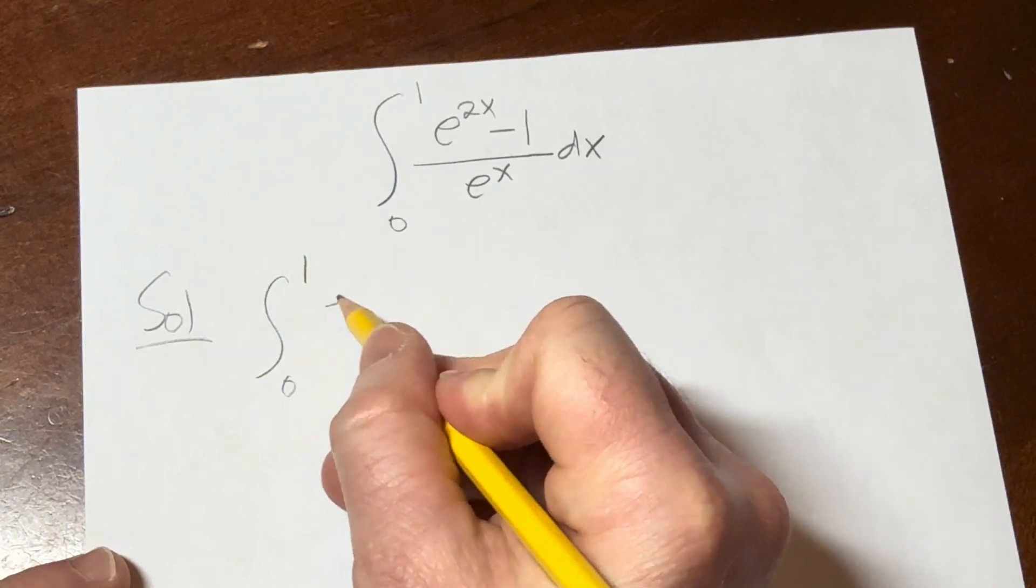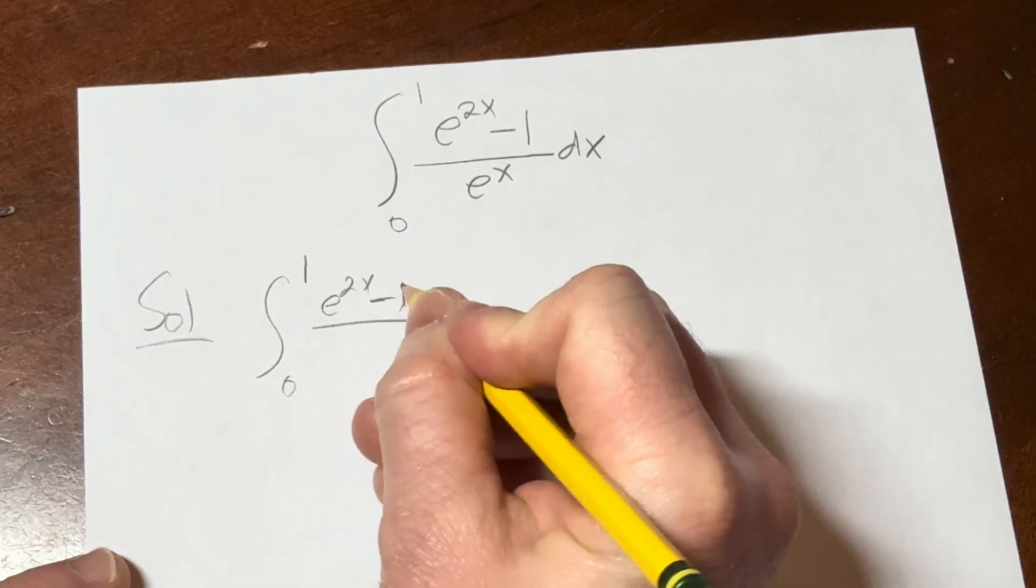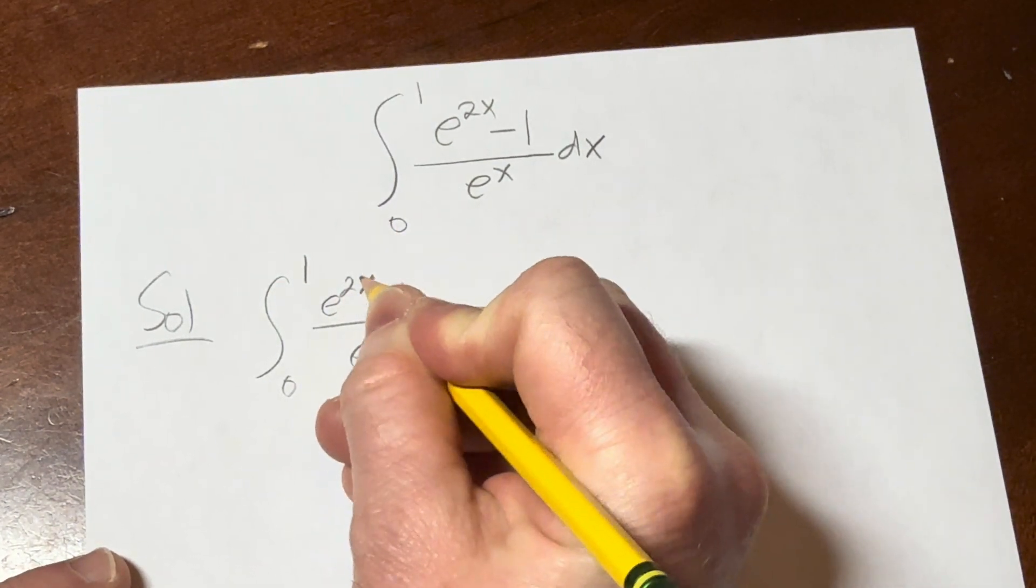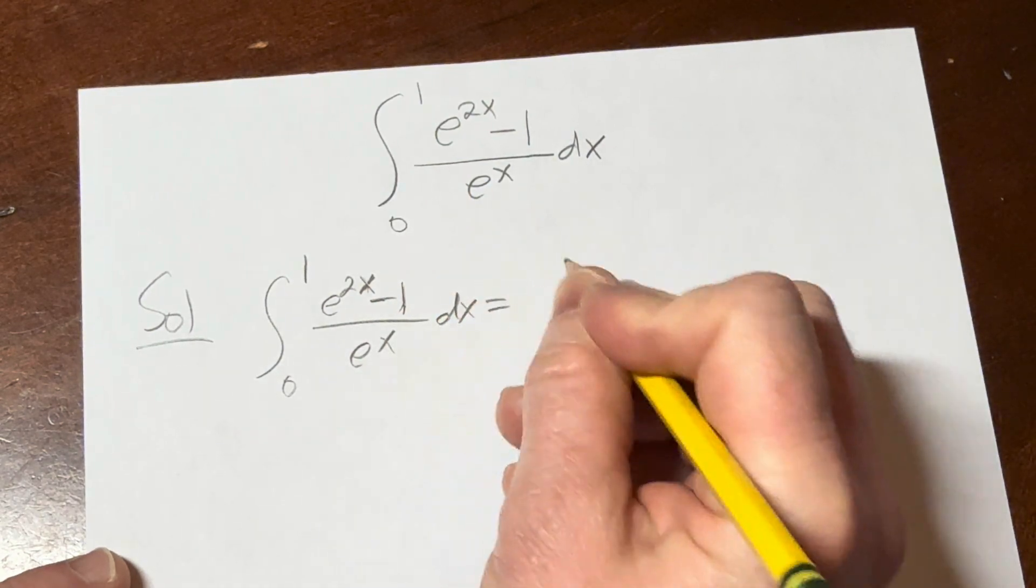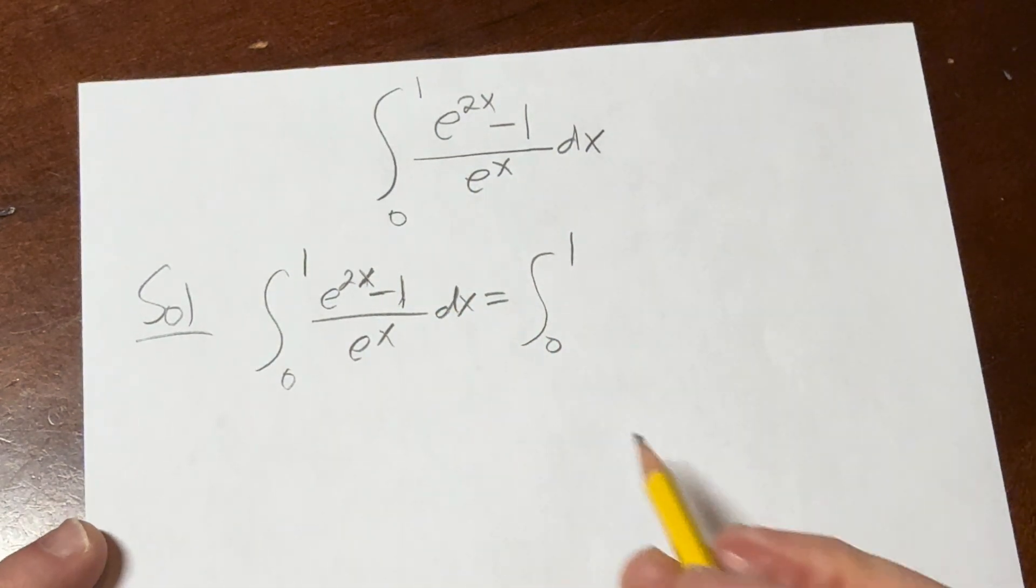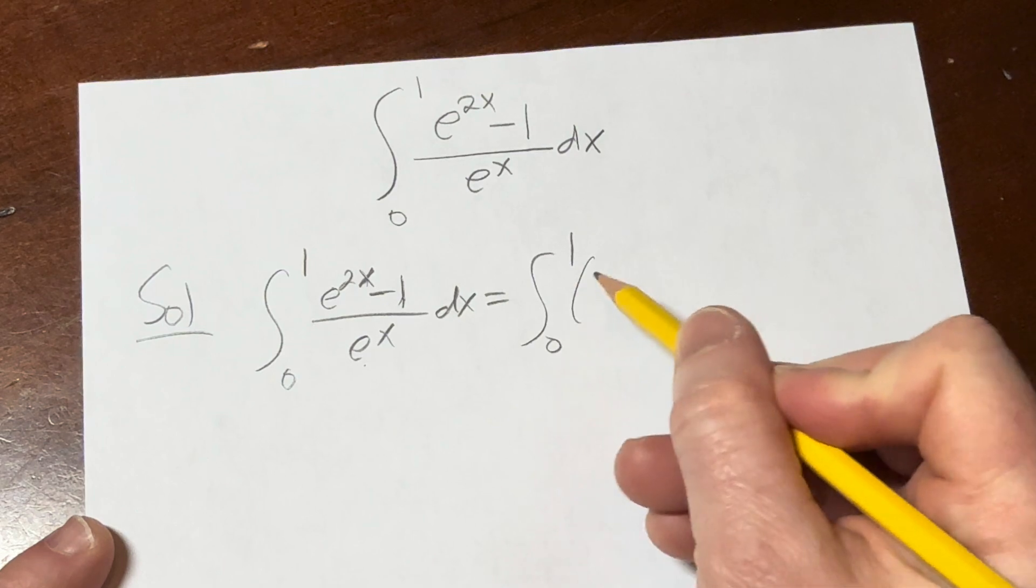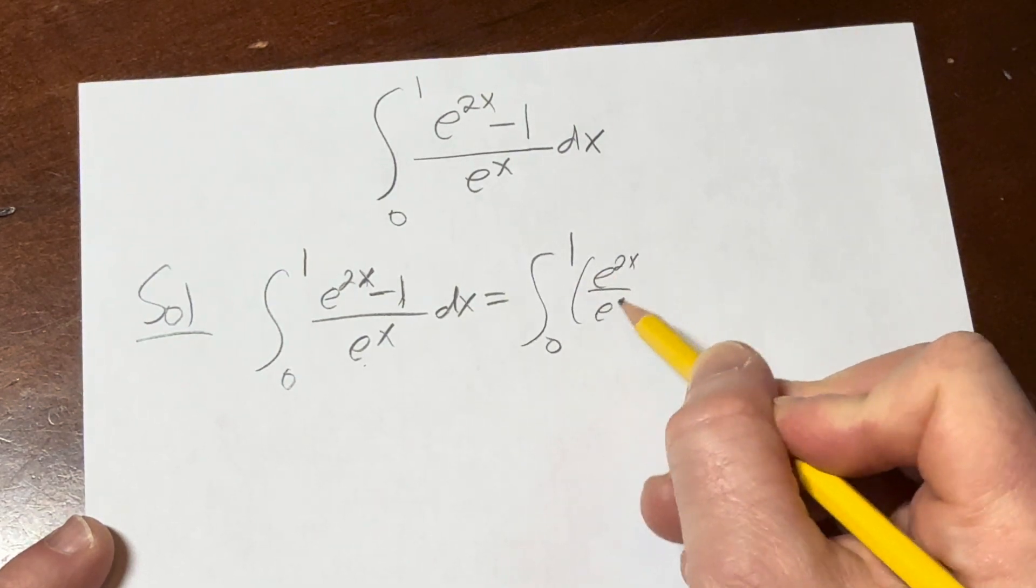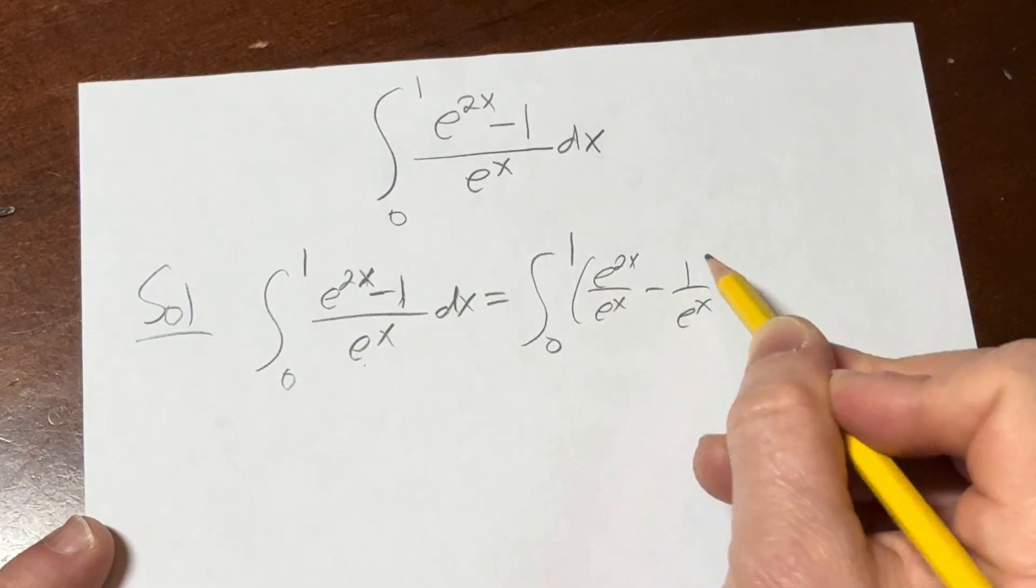I'm going to start by writing it again: e to the 2x minus 1 over e to the x, integrating from 0 to 1 with respect to x. Now we can break it up. It's e to the 2x over e to the x minus 1 over e to the x dx.